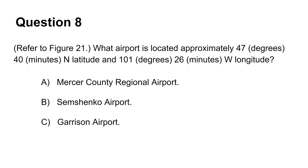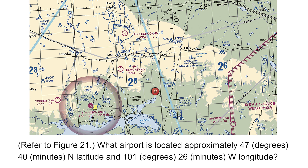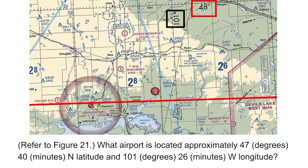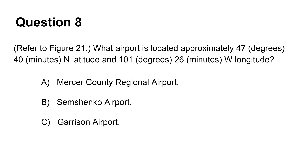The eighth question asks you to locate an airport based on known coordinates. First identify the latitude — there is a 48 degree north latitude line, and because latitude increases to the north, subtract 20 minutes south to arrive at 47 degrees and 40 minutes. Next identify the longitude line at 101 degrees west, and because longitude increases going westward, add 26 minutes west to arrive at 101 degrees and 26 minutes. The airport located at these coordinates is Garrison Airport, which is answer C.